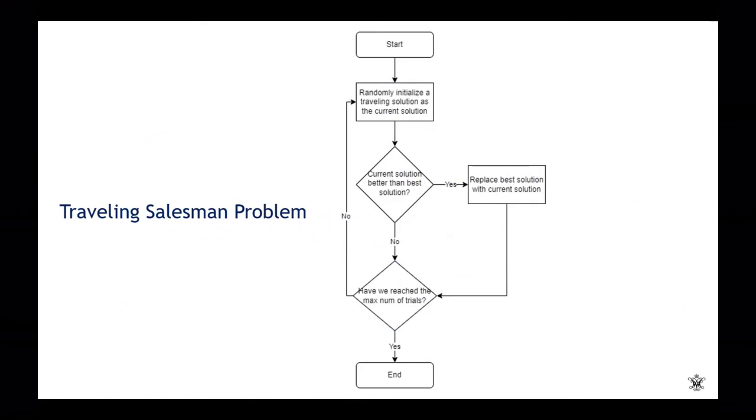Here is a flowchart of the traveling salesman problem. You can see the start symbol and then we randomly initialize the traveling solution as the current solution. Let's say if we go to city 1, city 2, city 3, city 4, city 5 in that sequence, then that is an initial solution.